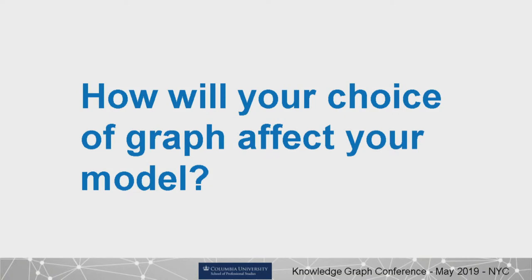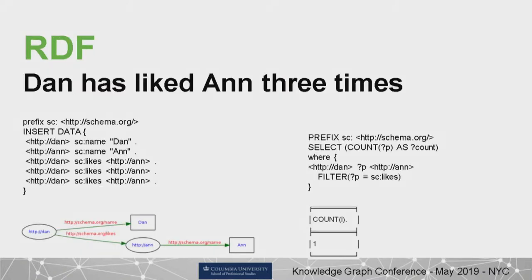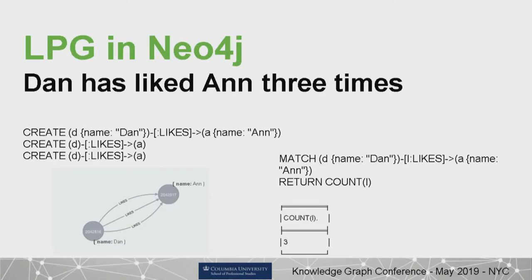In RDF, you cannot uniquely identify multiple instances of relationships — by relationships I mean the predicate of a triple. For example, in a social domain where you can 'like' something, Dan cannot like Ann three times, because stated three times it's exactly the same fact — you're just using the type of the relationship. In the property graph you can, because instances of relationships are uniquely identified. You can have three arrows, three relationships, three edges.